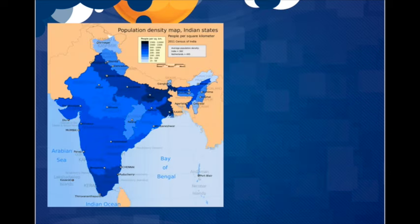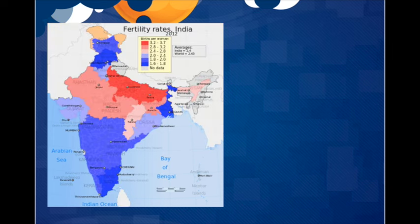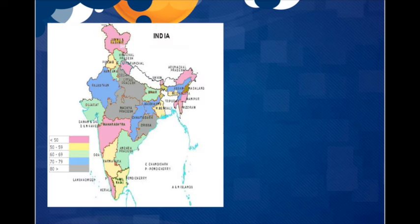India is the second most populated country in the world, soon to be the first. With over 1.2 billion inhabitants and a total fertility rate of 2.5, India is soon to become the most populated country of all. The average growth rate in India is 1.22%, with more than double the amount of births than deaths — 19.5 births to 7.3 deaths per 1,000 people. More females are likely to die as infants than males, with infant mortality rates for females at 43.2 deaths per 1,000 live births and males at 40.5. However, the total life expectancy in this region is about 68 years of age.